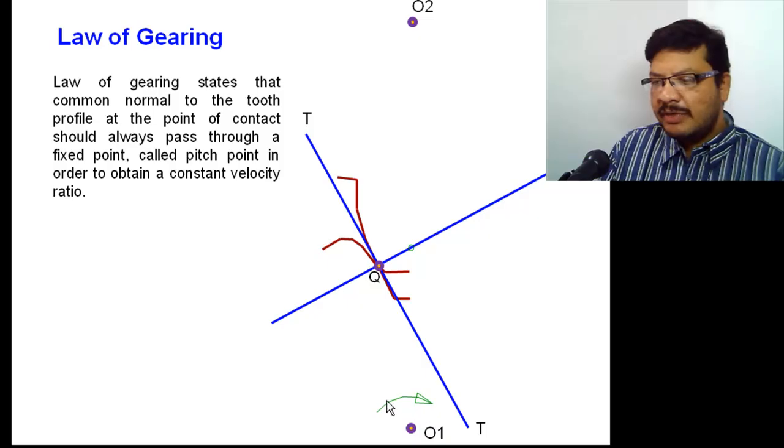Assume that first gear wheel is rotating in the clockwise direction. Then automatically the driven member will rotate in the counter clockwise direction. The line joining two centers of the gear wheels are like this. This is the pitch point P.